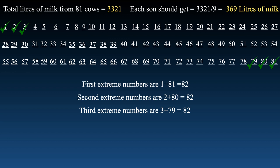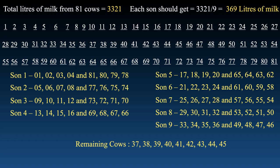We are trying to bring the numbers closer to 369, since each son should get 369 liters of milk. Let's give four such pairs — eight cows — to each son. Each son will then have 328. Son one gets the first four and last four cows, son two gets the next four from either end, and so on. After distributing this way to all nine sons, nine cows remain: numbers 37 to 45. Each son still needs 41 more liters to reach 369.